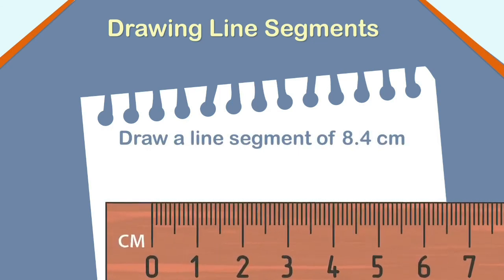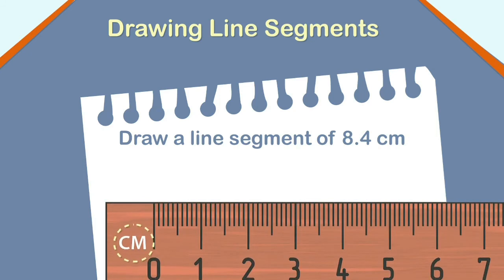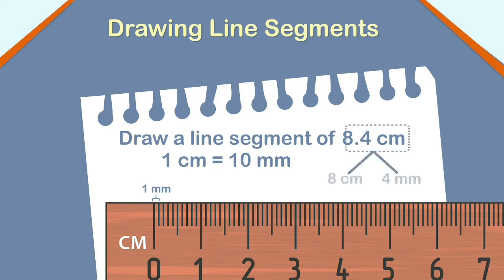Look at the ruler closely. The ruler has markings in centimeters. Each centimeter is divided into 10 smaller divisions. Each small division is equal to 1 mm. So, 1 cm equals 10 mm. 8.4 cm is 8 cm and 4 mm.